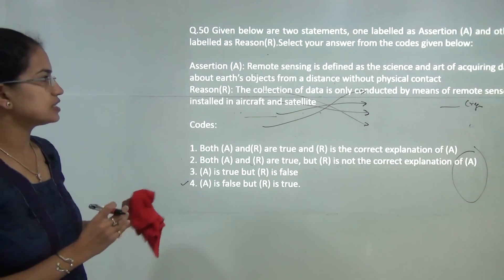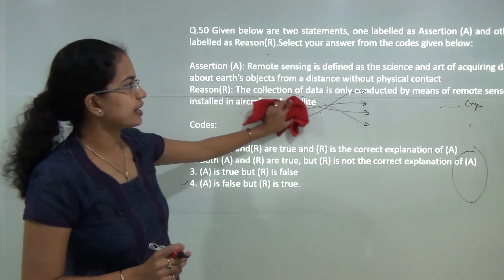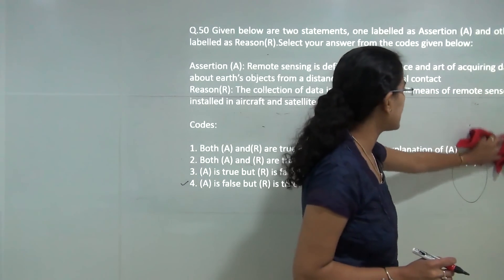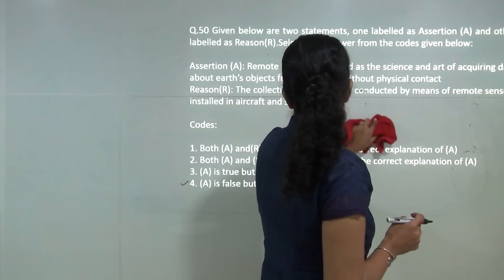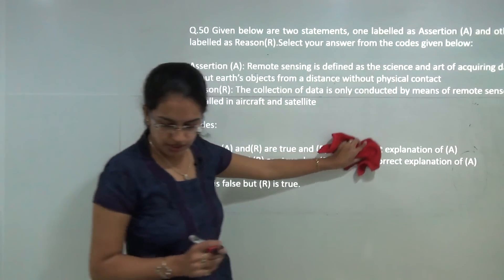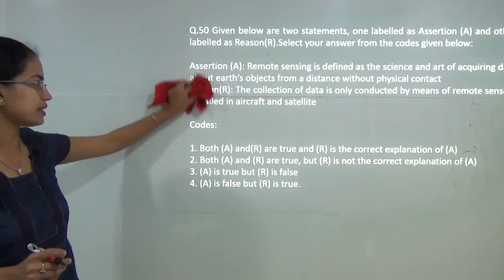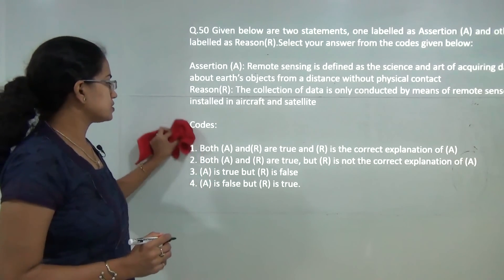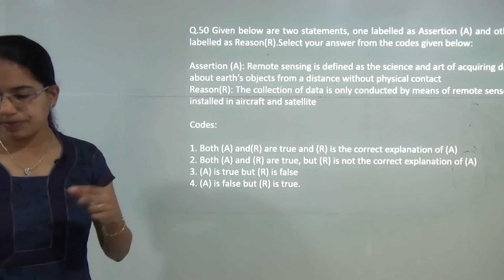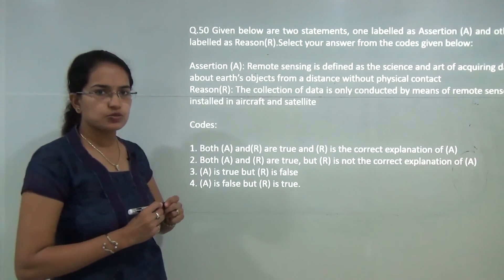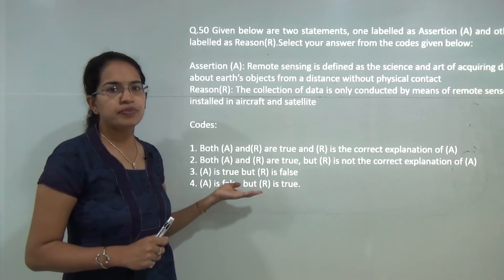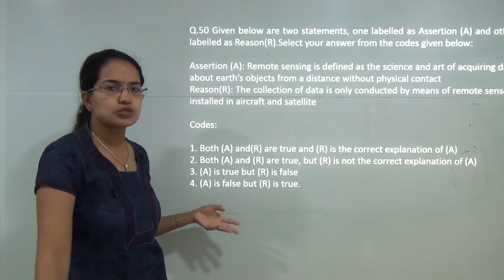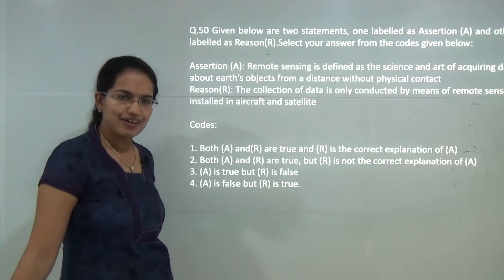Remote sensing is defined as the art of acquiring information about the Earth from a distance without physical contact, achieved by means of aircraft and satellites. Both statements are true and the reason explains the assertion — so option 1 is correct. With this we finish paper 2 for geography January 2017. We will be starting paper 3 with 75 questions in 3 sessions. If you have any doubts, leave them as comments below.